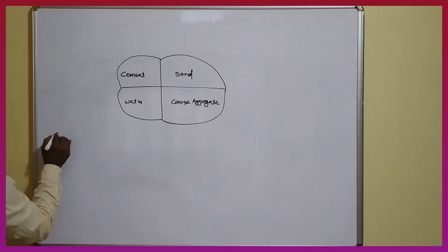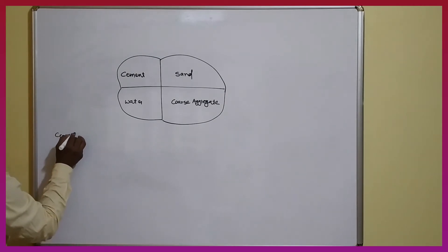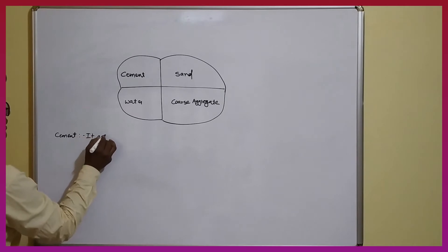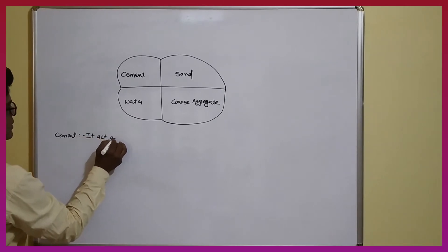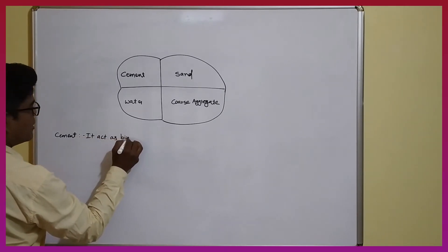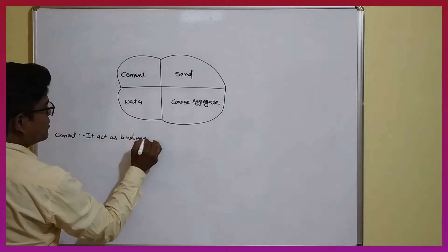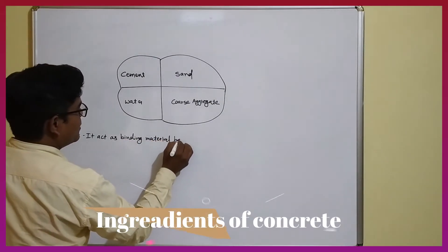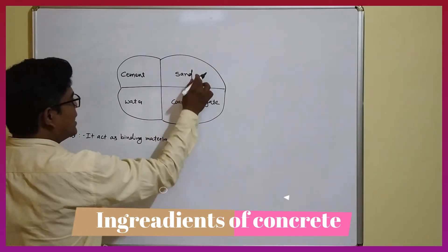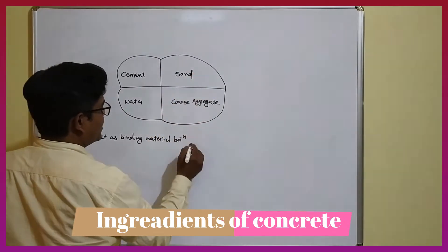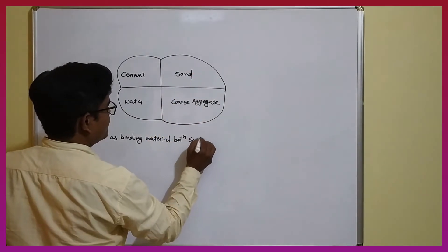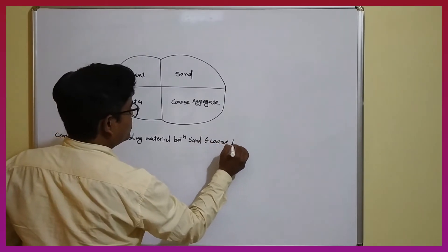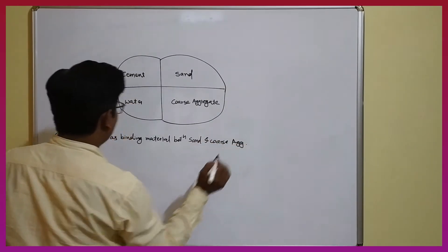The first material is cement. It acts as a binding material — a binding material between sand and coarse aggregate.